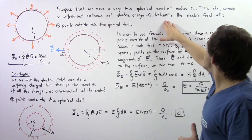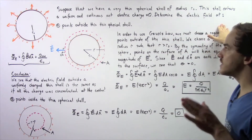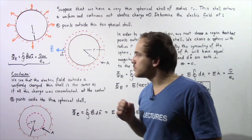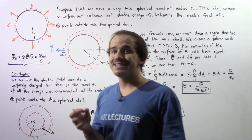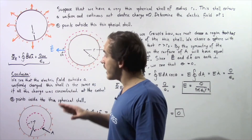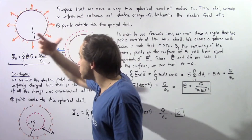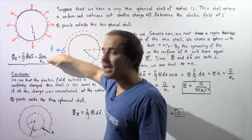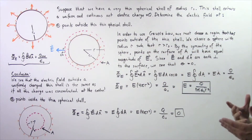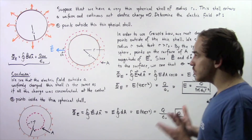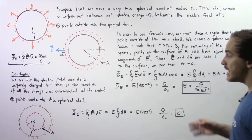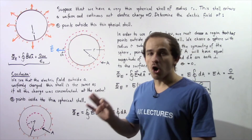Let's begin with Part A: determine the electric field at points outside this thin spherical shell. We apply Gauss's law, which states that the net electric flux equals the closed integral of the dot product E·dA, and this equals the ratio of the total charge enclosed in our chosen region to ε₀, where ε₀ is the permittivity of free space — a constant. To use Gauss's law, we must choose a region that contains the points we are considering.